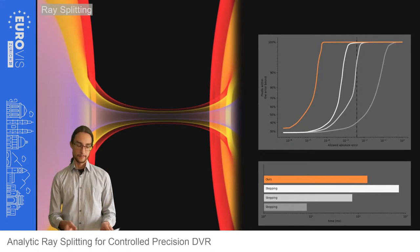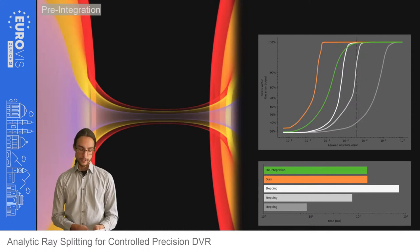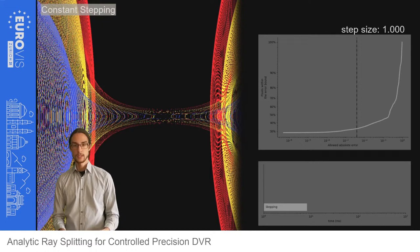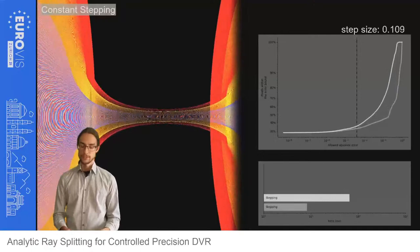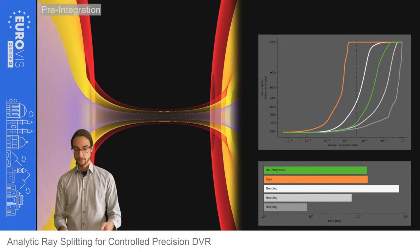For reference, pre-integration with a step size that leads to the same runtime as our method also shows large errors. We repeat the experiment with a sharper transfer function. The artifacts are even more prominent now and the convergence of constant stepping is lower. Again, ray splitting allows for more accurate rendering in less time, and pre-integration performs worse as well.